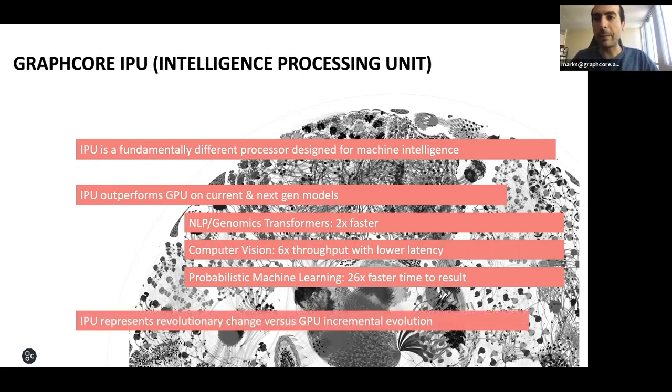Instead of thinking about how to make faster GPUs, like a faster horse, we wanted to think about what would next generation hardware look like if it was designed for machine learning from the ground up?